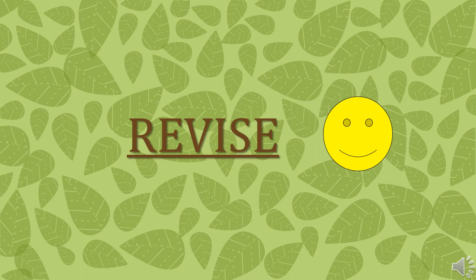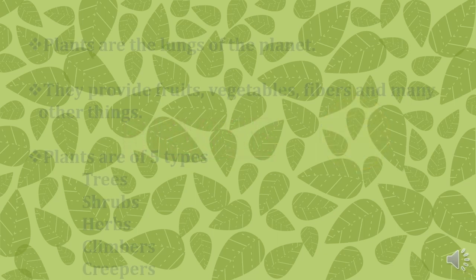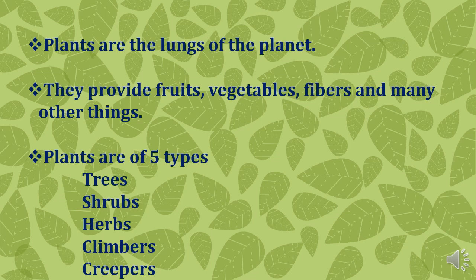Now it's time to revise what we have studied in today's class. Plants are the lungs of the planet. They provide fruits, vegetables, fibers and many other things. Plants are of five types: trees, shrubs, herbs, climbers and creepers.